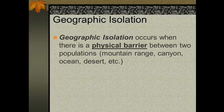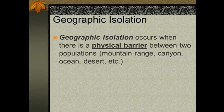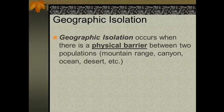Geographic isolation happens when there is a physical barrier between two populations. Examples include mountain ranges, canyons, oceans, and deserts. These are large geographic barriers. Usually something like a river or a creek is generally not enough to form a physical barrier.